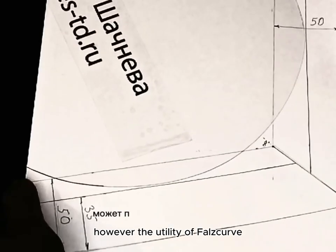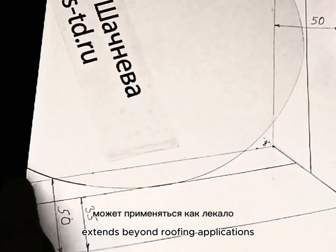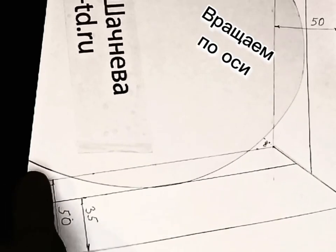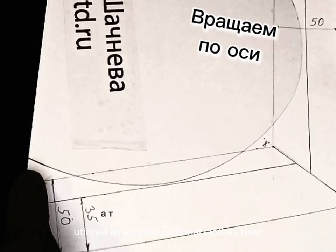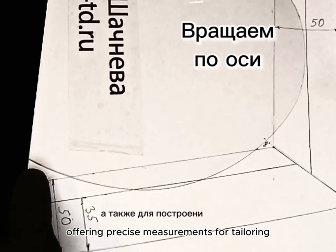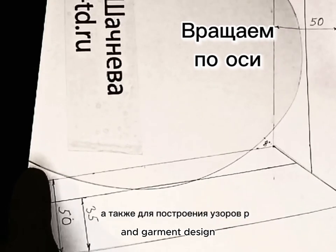However, the utility of Falscurve extends beyond roofing applications. It can also be utilized as a multifunctional clothes ruler, offering precise measurements for tailoring and garment design.